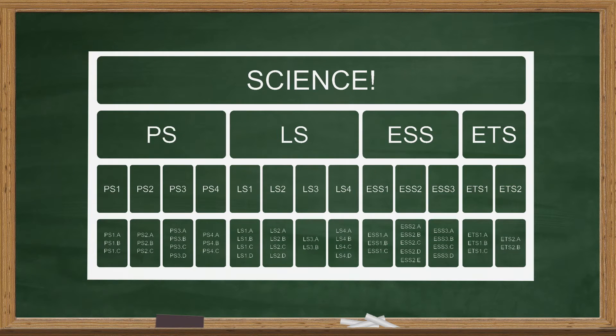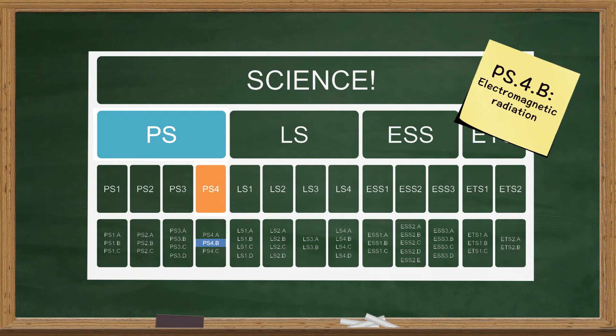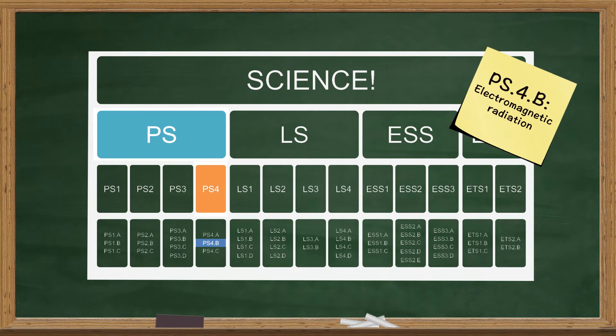For instance, PS4B is simply the physical science discipline, DCI number four, component idea B. Knowing the basics of these codes will help them when they're trying to read the performance expectation tables later on.